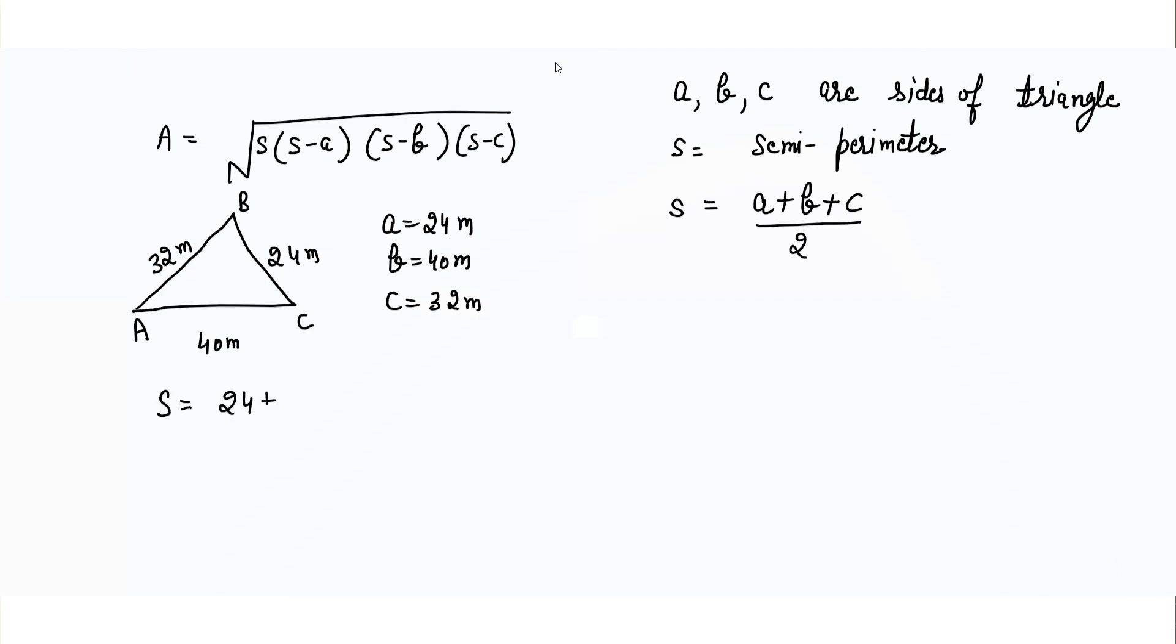We will calculate the value of s. S equals 24 plus 40 plus 32 divided by 2. We add all the sides and divide by 2, so we get 96 divided by 2, which equals 48 meters.